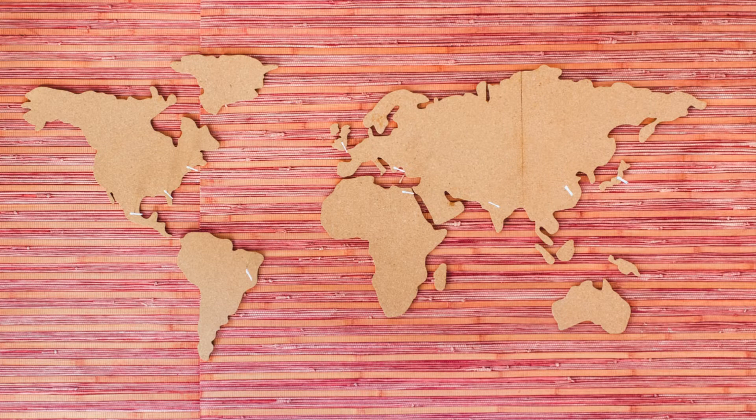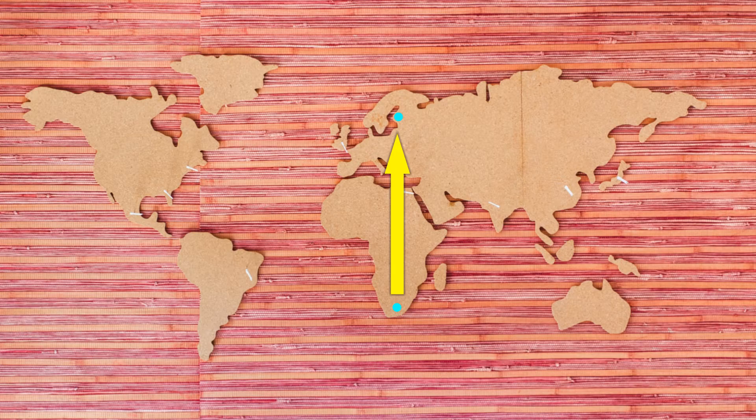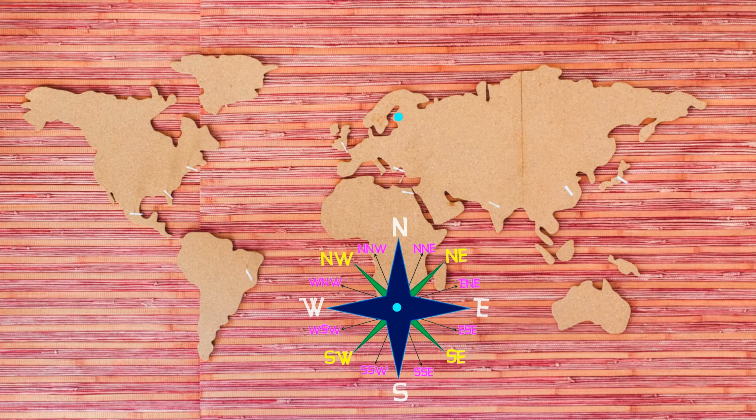Say for example you are in South Africa, this is where I am right now, and you want to fly straight to Finland. In which direction would you travel if you flew from South Africa to Finland? Once again, you can draw your compass and it will show you that you would travel to the north or in a northerly direction.